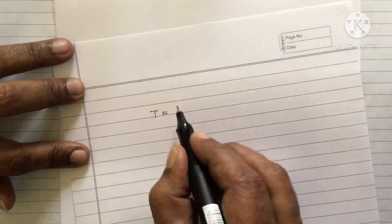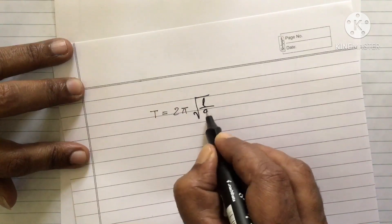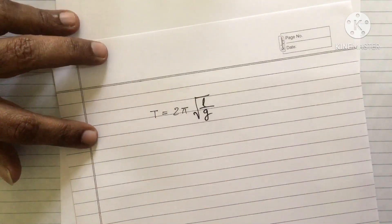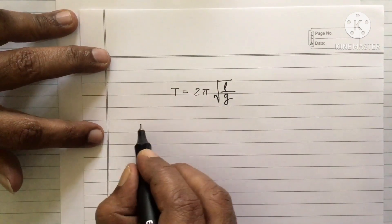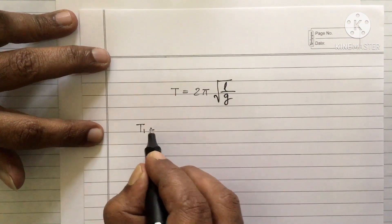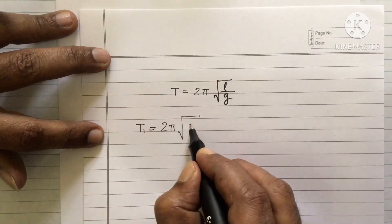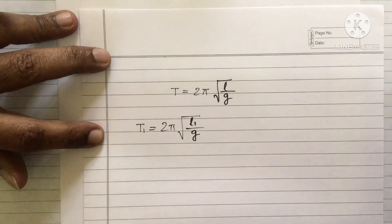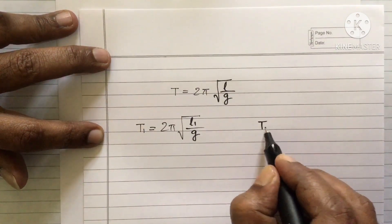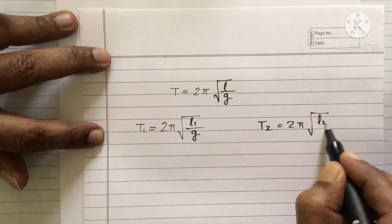Time period T is equal to 2 pi square root of L by G. That is the formula for time period of the simple pendulum. So, for the first pendulum if I am writing time period T1 is equal to 2 pi square root of first pendulum length is L1 we have taken. G is the same. Second pendulum T2 is equal to 2 pi square root of L2 by G.